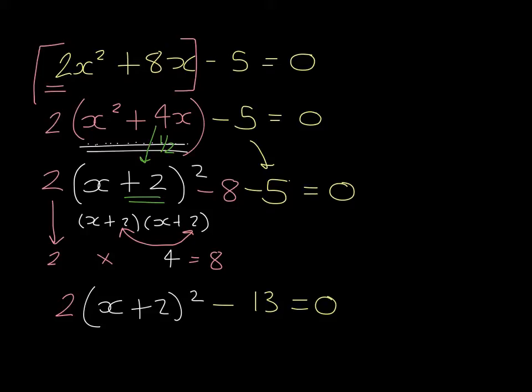We then have to solve the equation using this. So 2 bracket x plus 2 all squared equals 13. Make sure you then divide by 2. So x plus 2 all squared equals 13 over 2.